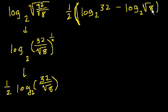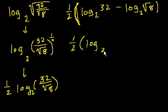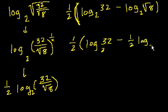Let's see. Well here, once again, we have a square root here. So we could say that this is equal to 1 half times log base 2 of 32 minus, this is 8 to the 1 half, which is the same thing as 1 half log base 2 of 8. We learned that property in the beginning of this presentation.